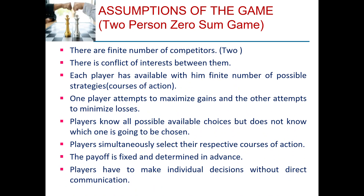Next, the assumptions of the game. In this video we are going to deal only with two-person zero-sum games, so the number of players involved is only two. The assumptions are: there are a finite number of competitors, that is two; there is conflict of interest between them; each player has a finite number of possible strategies or courses of action; one player attempts to maximize gains and the other attempts to minimize losses; both players know all possible available choices but do not know which one will be chosen; players simultaneously select their respective courses of action; the payoff is fixed and determined in advance; and players make individual decisions without direct communication.